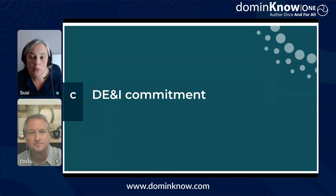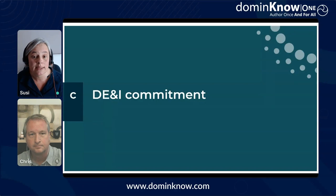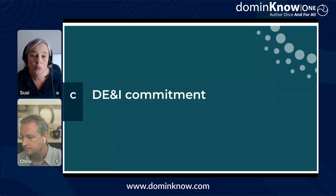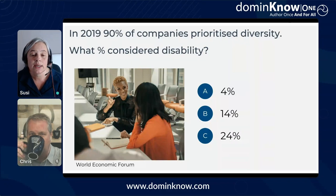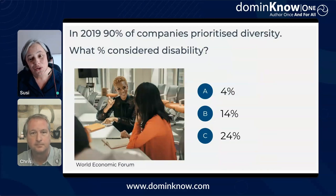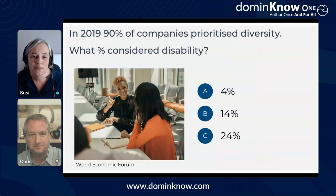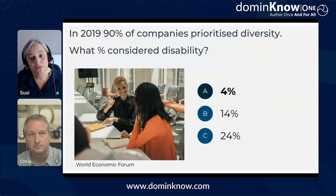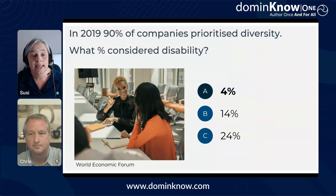My last point, and one that I think is becoming more and more important for organisations, is that a commitment to diversity, equity and inclusion is only really legitimate if it encompasses all lenses of diversity — and that includes disability. To explore this, we're going to look at some statistics from the World Economic Forum. In research carried out in 2019, they found that 90% of companies prioritise diversity, but what percentage do you think consider disability? The options are 4%, 14% or 24%. In actual fact, only a staggering 4% consider disability.